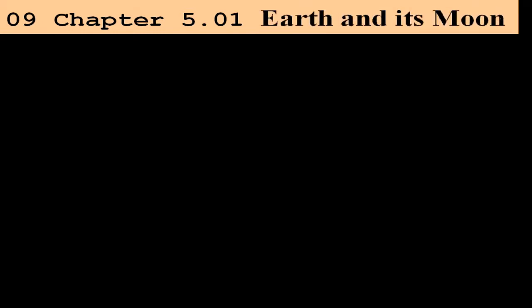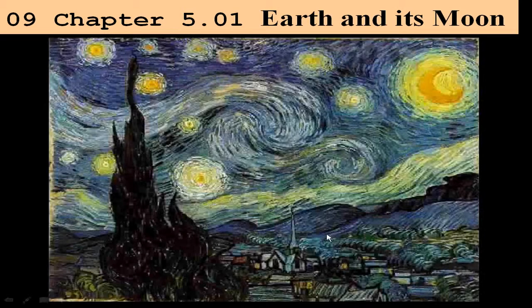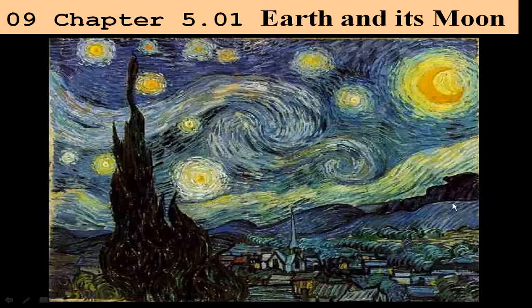We're going to enter into the solar system and look at our solar system for astronomy. One place to start is our own Earth. Earth is part of the solar system, and to understand astronomy better, we need to understand what's happening to the Earth — and in particular, the Earth and its moon. Here's the depiction of the moon and the Earth as given by Van Gogh, a very pretty picture called Starry Night.